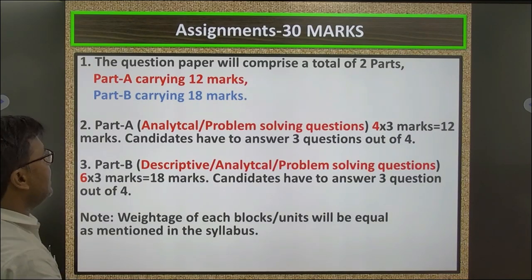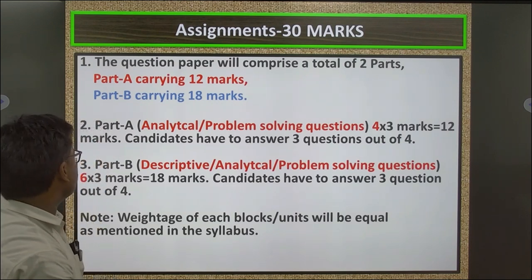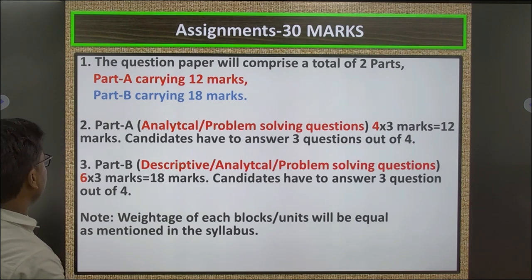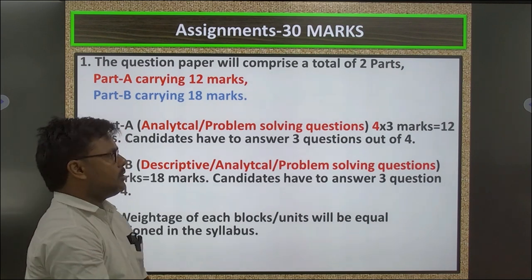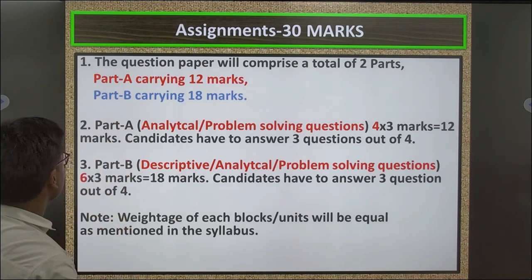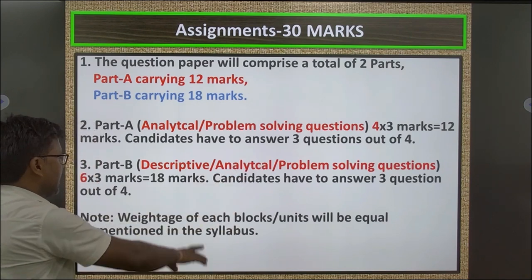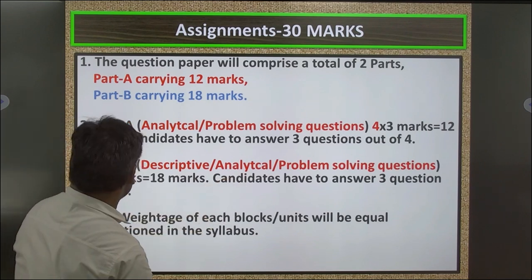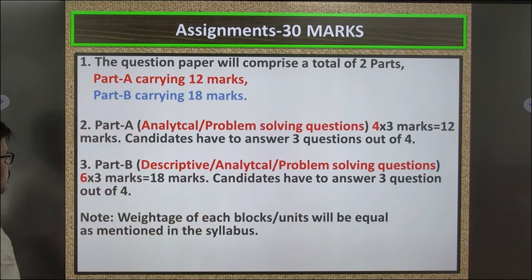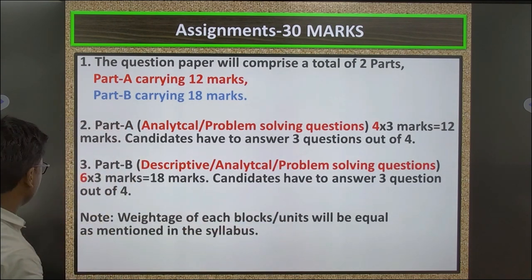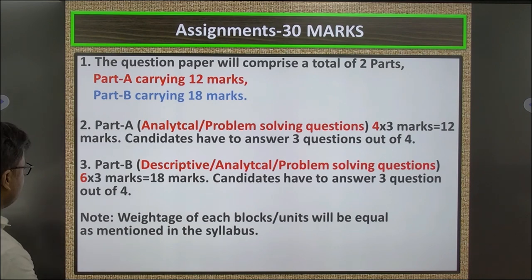The assignment question paper will comprise two parts. Part A carries 12 marks — analytic and problem solving questions, 4 questions of 3 marks each. Candidates have to answer 3 questions out of 4. Part B carries 18 marks — descriptive, analytical and problem solving questions, 3 questions of 6 marks each. Candidates have to answer 3 questions out of 4. Note: weightage of each block's units will be equal as mentioned in the syllabus.